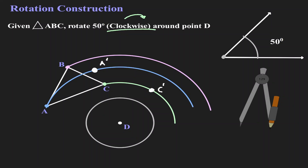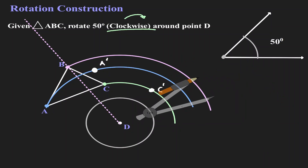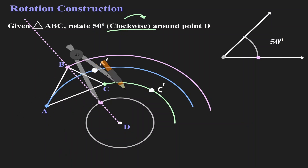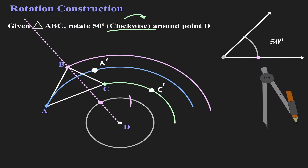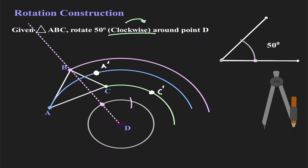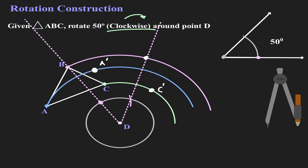Let's start by creating a line that connects point B to the center of rotation at point D. Now let's get our compass and measure the arc for 50 degrees. Notice that my metal leg is at the lower side of the angle. Now let's place my metal leg where the line intersects the circle, and without changing the measurement of my compass, let's look for that intersection. Now that we have found it, let's create a line connecting point D with the new intersection. Where my new line intersects the arc for point B, this is where we find the image of B — let's call it B'.